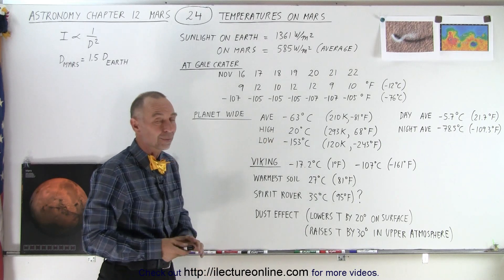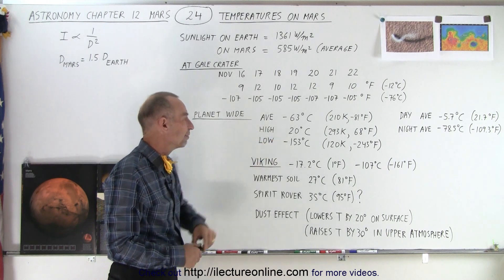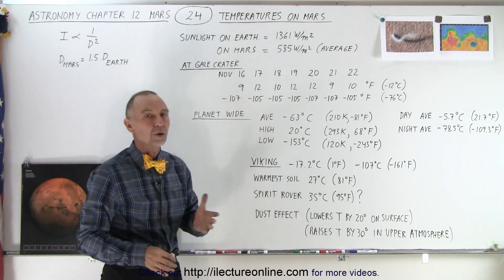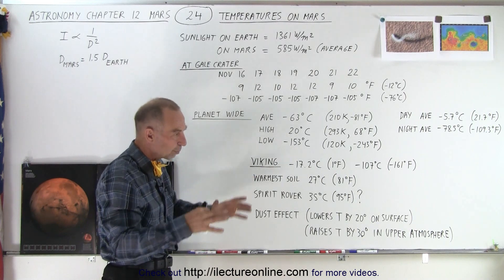You would freeze to death at 20 degrees centigrade if you didn't have a space suit on. The low on average is minus 153—extremely low temperatures due to the regions in the northern polar cap and southern polar cap that can get very, very cold during the winter.